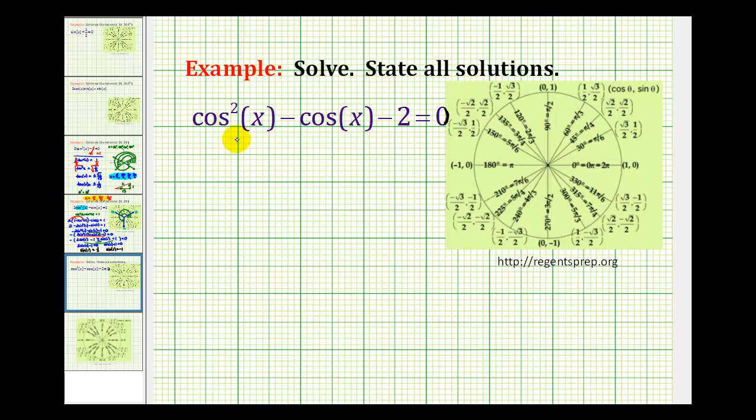The next thing to notice about this equation is that it's in quadratic form. Meaning if we let y equal cosine x, we could rewrite this as y squared minus y minus 2 equals 0. So if you're able to solve this type of quadratic equation by factoring, you should also be able to solve this trig equation by factoring.